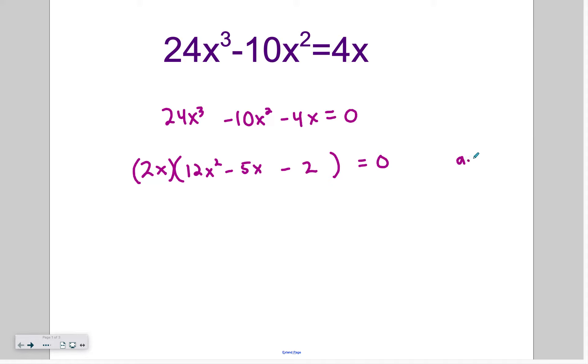Which means we're looking for factors of a times c. a times c is negative 24. We are looking for factors of negative 24 that add up to b, which is negative 5. So let's write out our factors of negative 24. I'm not going to write all the negatives, so we'll just do 1 and 24, 2 and 12 works, 3 times 8 works, 4 times 6. Now if they multiply to negative 24, then their signs are different. So we're looking for a difference of 5. And 3 and 8 have a difference of 5.